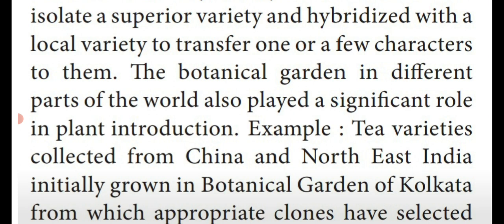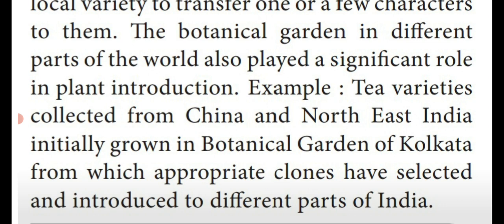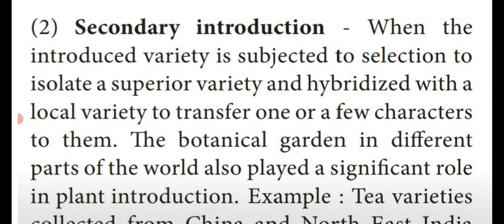Secondary introduction takes place in different botanical gardens of the world, which play a significant role in plant introduction. For example, tea varieties collected from China and Northeast India were initially grown in the botanical garden of Kolkata, from which appropriate clones — meaning the next generation — were selected and introduced to different parts of India. A new variety of tea collected from China was hybridized with Northeast Indian tea, grown in the botanical garden of Kolkata, producing different clones which were then introduced into different parts of India. That is known as secondary introduction.